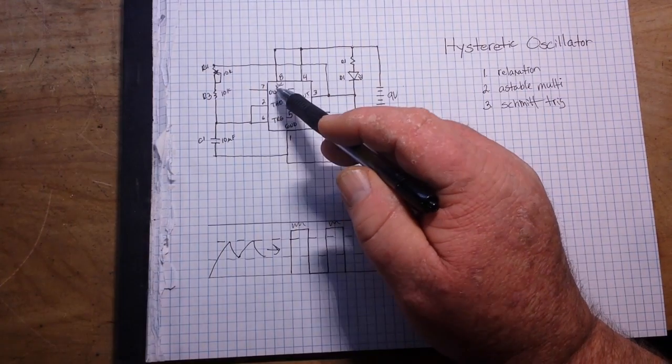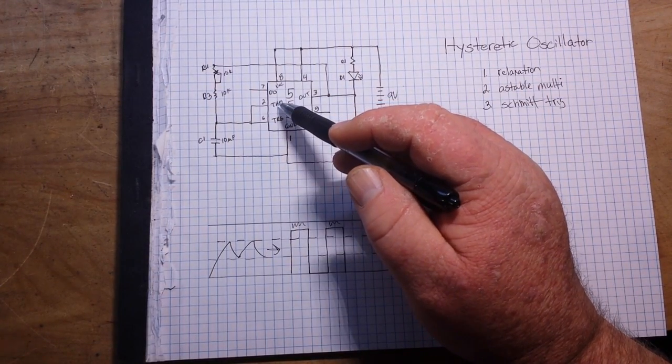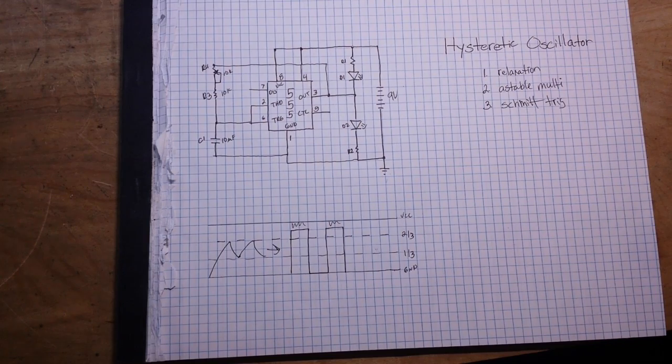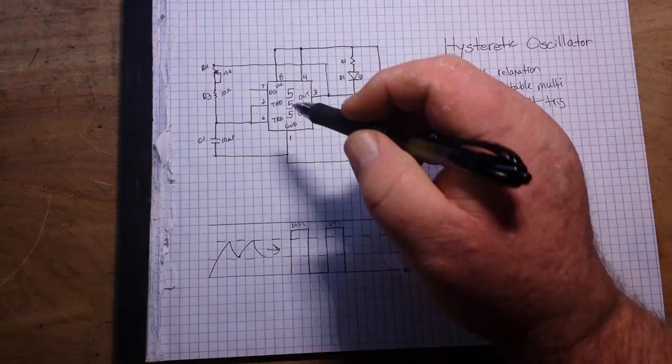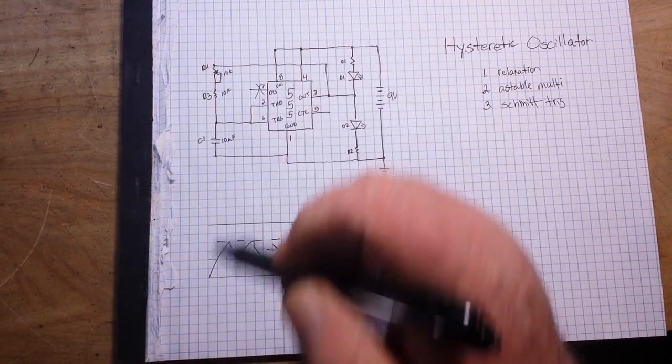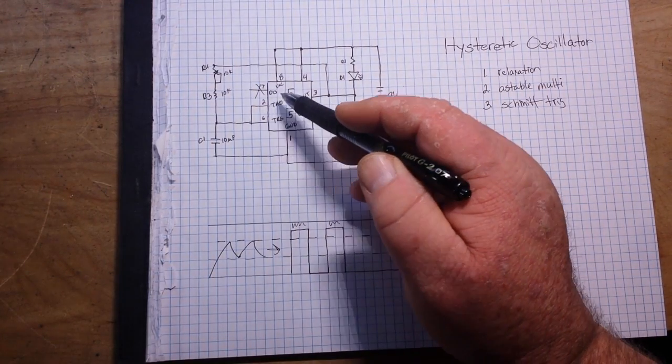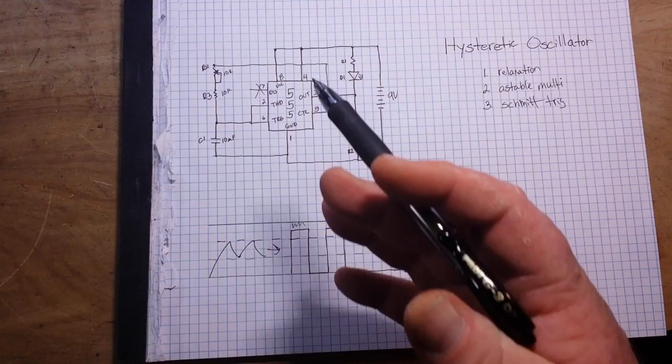So we have our 555 timer. Pin 8, of course, goes to VCC. Pin 1 goes to ground. Now normally we use our discharge and our threshold, our trigger, and our control all together to create our oscillation.